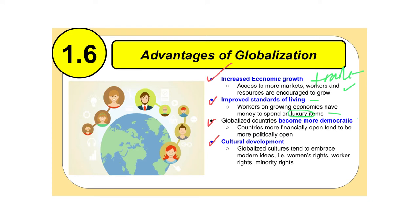Globalized countries becoming more democratic — countries that are financially open tend to be more politically open as well. And then lastly, cultural development: globalized cultures tend to embrace modern ideas such as women's rights, worker rights, and minority rights. This tends to increase and improve the social status and social networks of people.